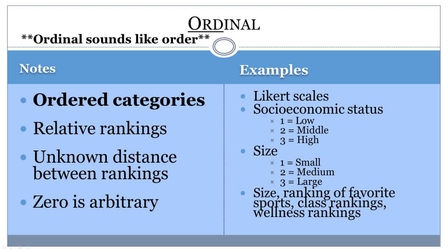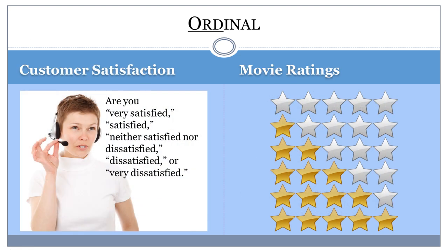While there is an order, it is also unknown how much distance is between each category. The intervals between each number are therefore not necessarily equal. Ordinal scales are often used to measure attitudes and perceptions. For example, a survey may ask how satisfied a customer is on a scale from very dissatisfied to very satisfied.